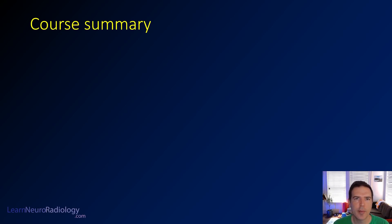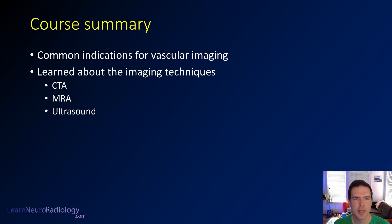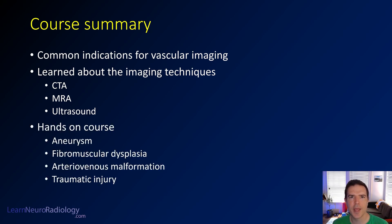Congratulations if you've made it to the end of this video — you've probably completed the vascular capstone course. In this course we've learned common indications for vascular imaging ranging from new neurologic deficits or stroke, trauma, and suspected vascular abnormalities on CT or MR. We've covered imaging techniques including CT angiogram, MR angiogram, ultrasound, and catheter angiography. In the hands-on cases you've seen common pathologies including aneurysm, fibromuscular dysplasia, arteriovenous malformation (AVM), and in this last case, traumatic arterial injury after a car accident.